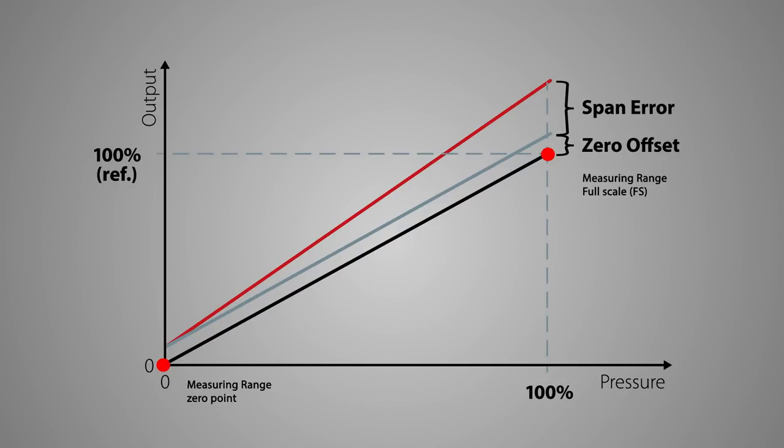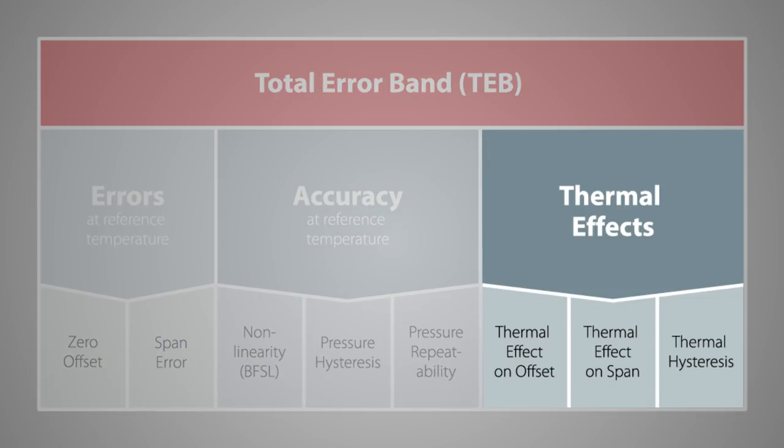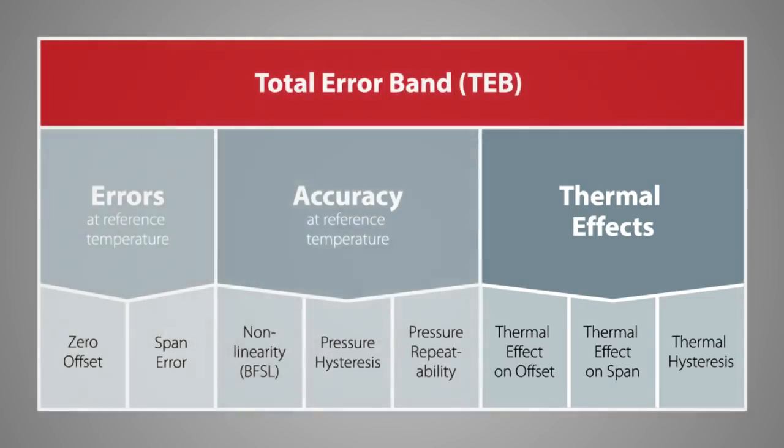The span error describes the error of the output signal at the full scale value minus the zero offset error of the measuring range. Moving to the thermal effects, let's look at what can influence your measurement and cause deviations. The thermal effects are mainly caused by the temperature-dependent physical characteristics of the mechanical and electrical components used to build electronic pressure transmitters. For instance, the electrical resistance of metal increases with the rise of temperature, where the piezoresistive effect of the semiconductors decreases.